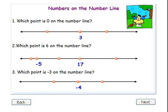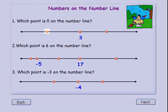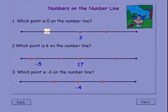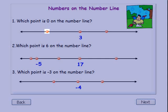Let's practice with numbers on the number line. Number one: which point is zero on the number line? You decide and we'll show you the correct point in a few seconds. Zero is less than three, so it's to the left of three on the number line.